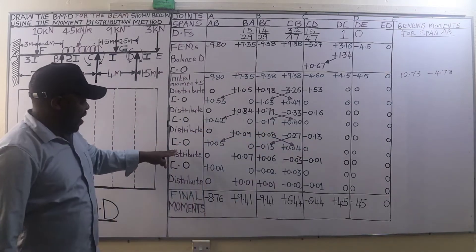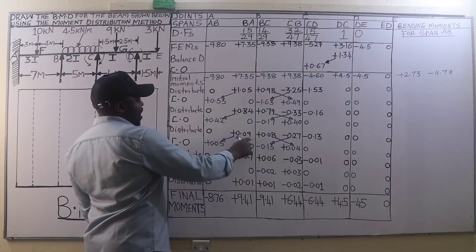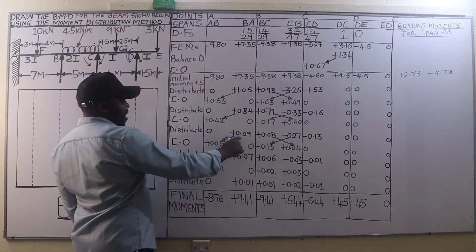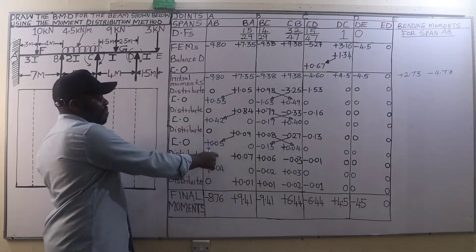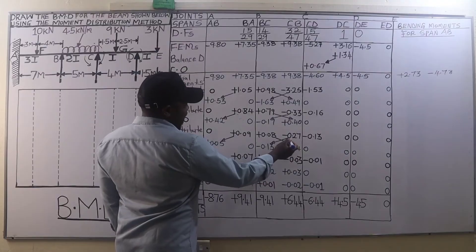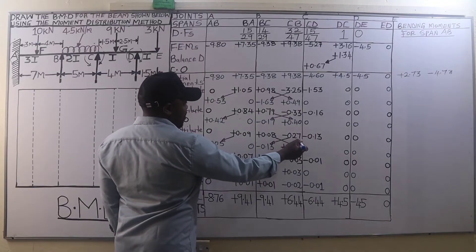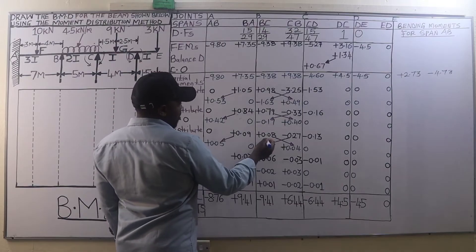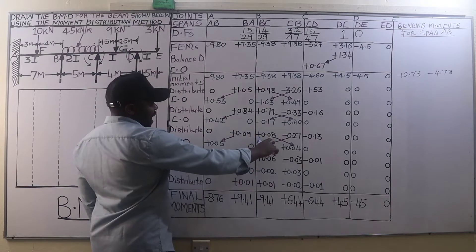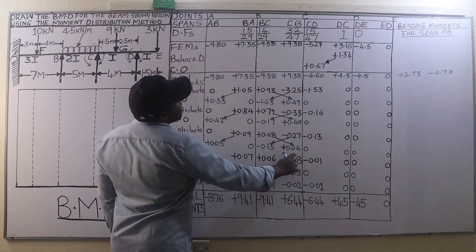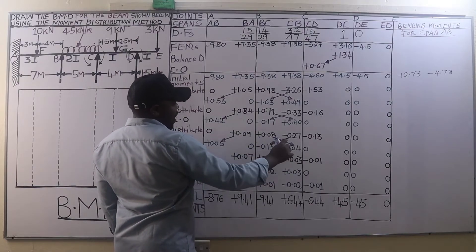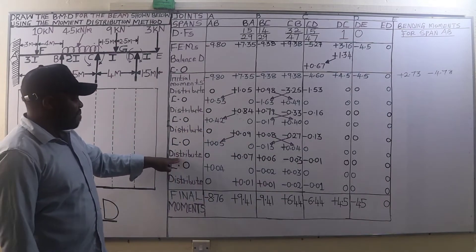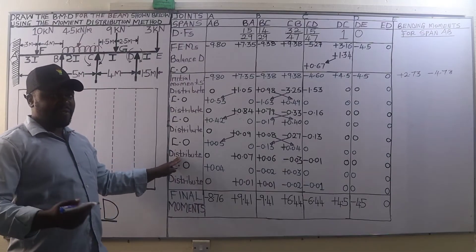Then we carry over. Carry half of 0.09 from joint B to joint A, giving positive 0.05. Carry half of negative 0.27 from joint C to joint B, which is negative 0.13. On joint B carry half of 0.08 to joint C, which is 0.04. Then we distribute again — we have not yet reached the required degree of precision.